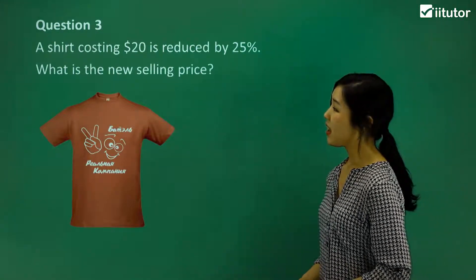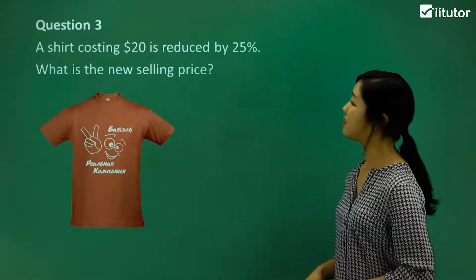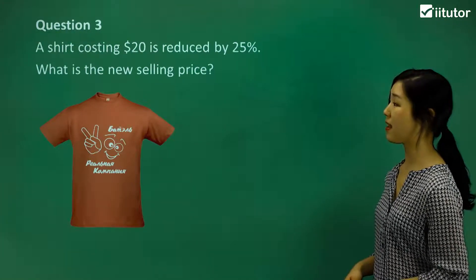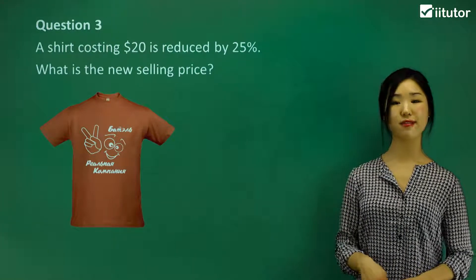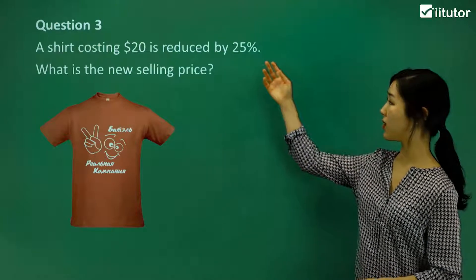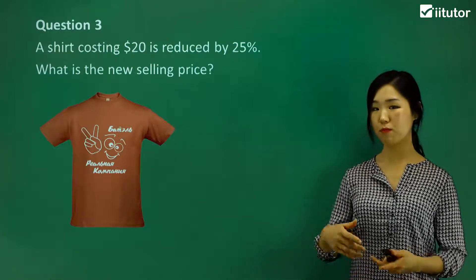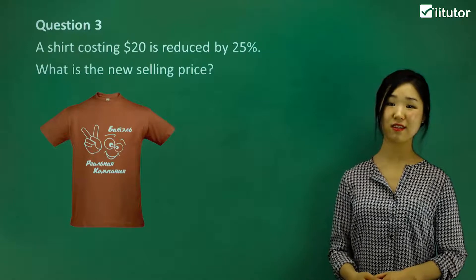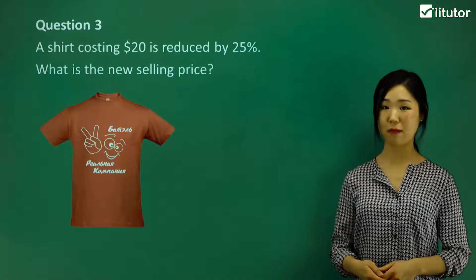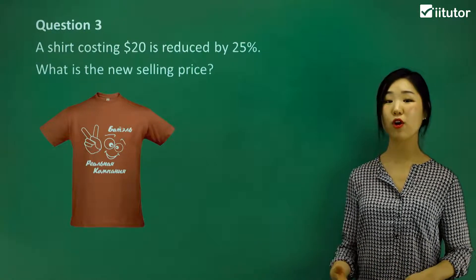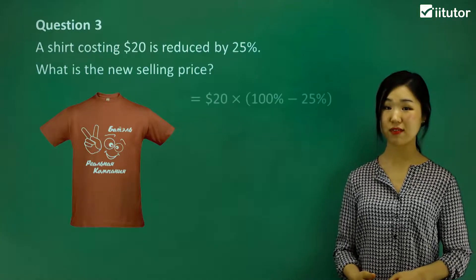Question 3. A shirt costing $20 is reduced by 25%. What is the new selling price? So basically it's on a sale, a 25% sale. So if I'm having a 25% discount, how much of the original value am I paying?